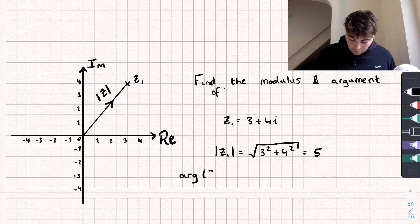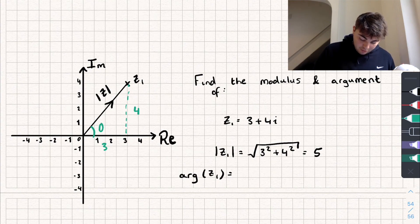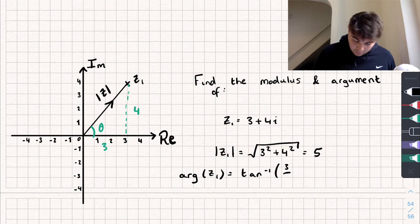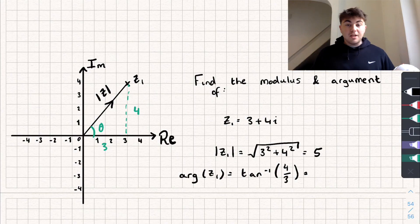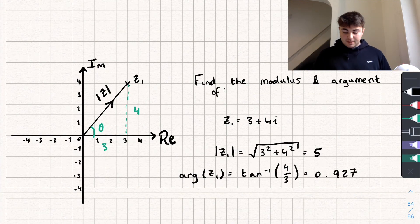Now for the argument — the arg of z1. We've got the opposite side length, which is going to be 4, and the adjacent side length, which is 3. We want this angle theta, so we're going to do inverse tan of 4 over 3. When taking the argument, we're working in radians, not degrees. Inverse tan of 4 over 3 gives me an argument of 0.927 to 3 decimal places. So that would be the modulus and argument of z1.